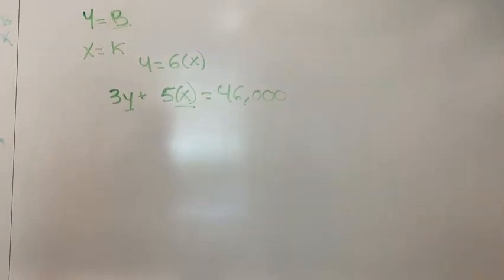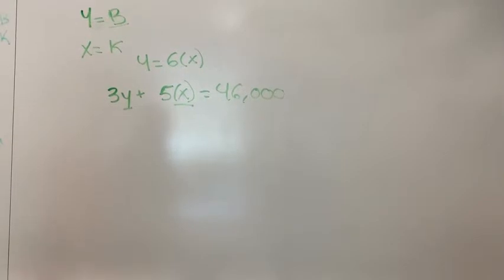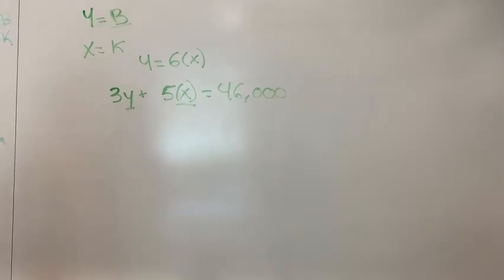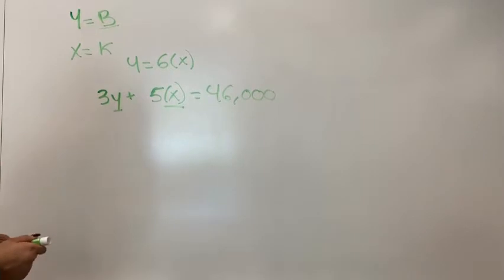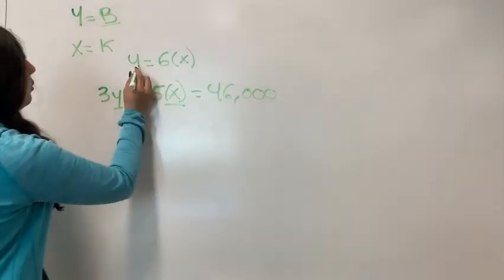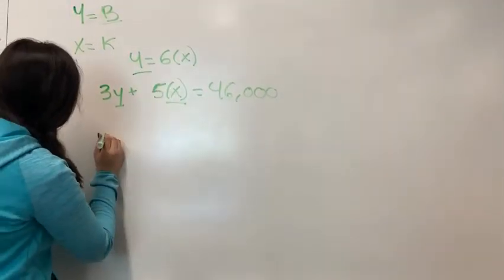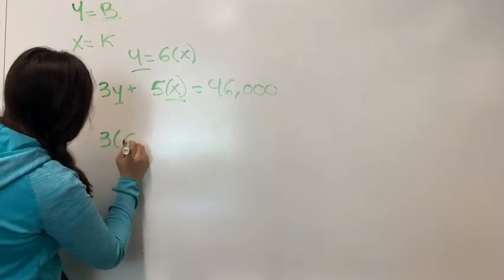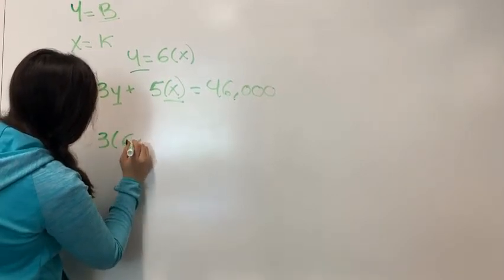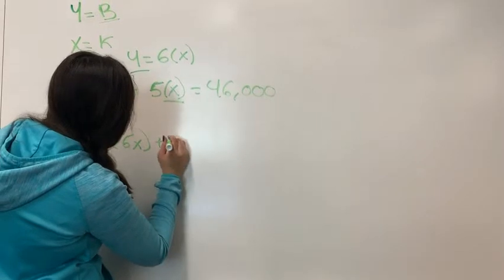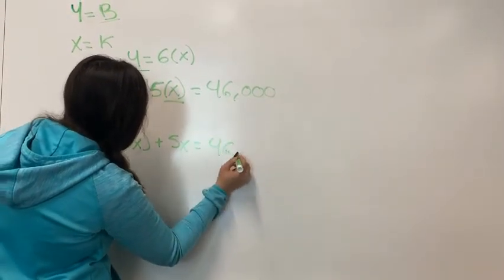We can now use substitution to solve for each y and x. And so now just like mentioned on the other equation I had before, we can substitute for y and we can do 3 times 6x plus 5x equals $46,000.